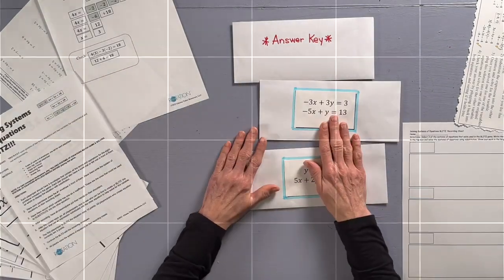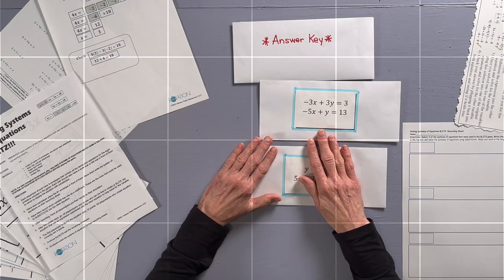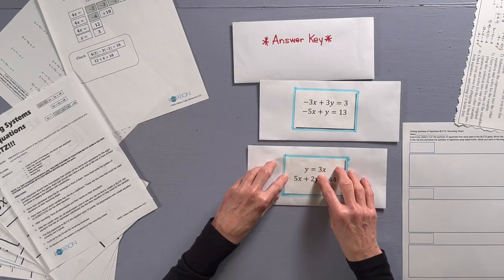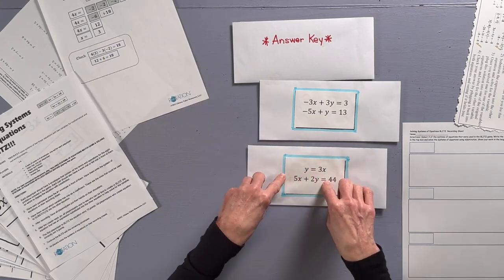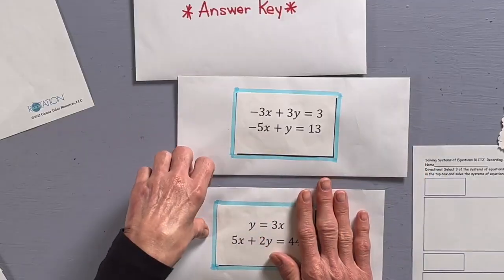The goal of this game is to think about the system of equations on the front of the envelope and use the cards inside to substitute the value of the variable into the second equation. It will make sense after we play.